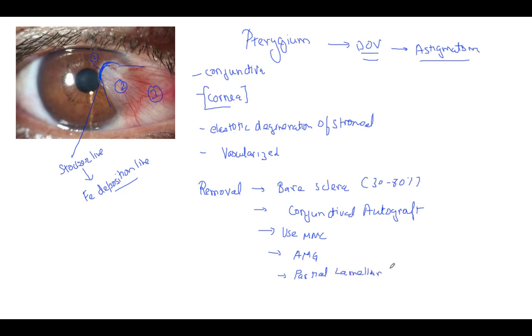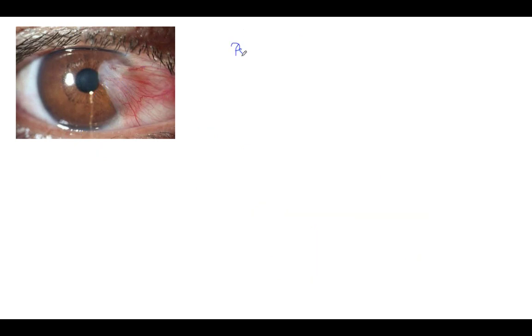Some important points regarding pseudo-pterygium and difference of pterygium with pseudo-pterygium you have to remember. I would just enumerate and you can write it in your notes. In pseudo-pterygium, there is an inflammatory adhesion. Let's say there is a thermal injury or a chemical injury, there can be a pseudo-pterygium. But pterygium is a non-inflammatory growth.